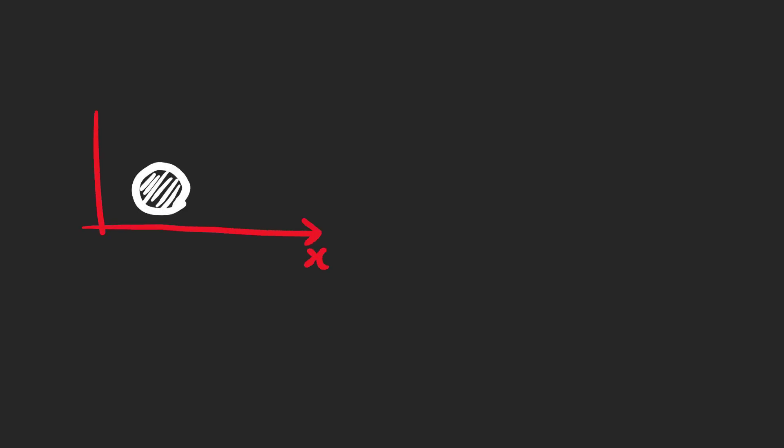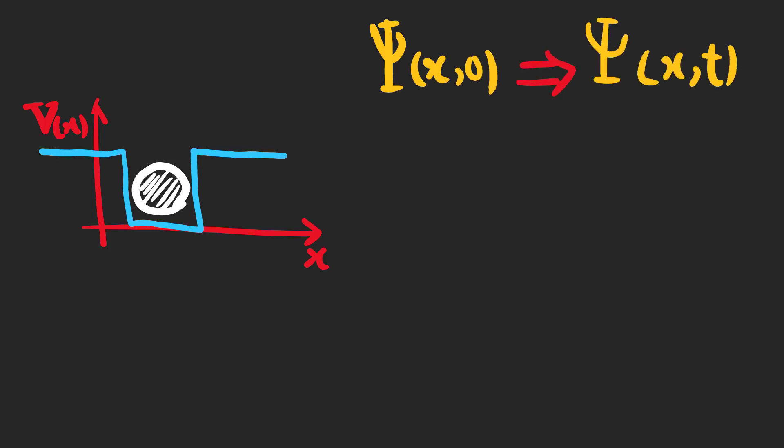Suppose that a particle is in potential V(x) which is independent of time and its starting wave function is psi(x,0). In this video we are going to find psi(x,t) for the infinite square well.